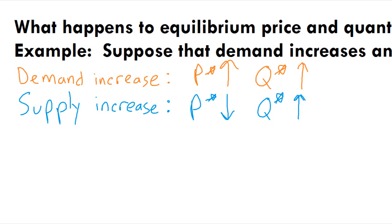But the effect on P star is ambiguous, meaning we don't know what will happen. The end result actually depends on the relative sizes of the shifts. In fact, there are three cases we can draw.